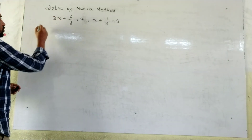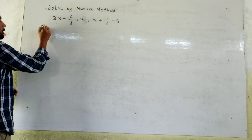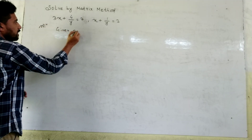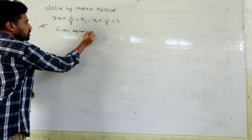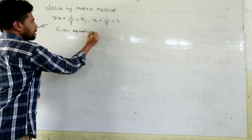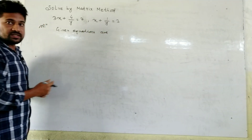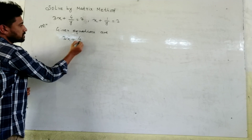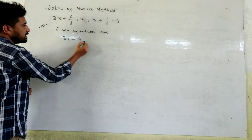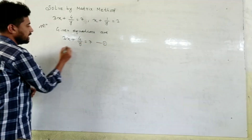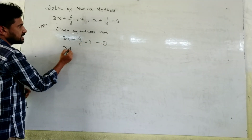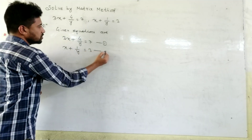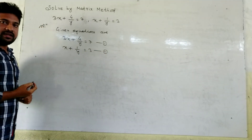Solution. The given equations are: equation 1 is 3x plus 4 over y is equal to 7, and equation 2 is x plus 1 over y is equal to 3. Two equations are given here.